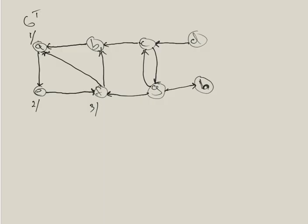B has an arrow going to A, but we can't go there because we've already been. So B finishes at time five. We go back to its predecessor F — no other edges — so F finishes at time six. We go back to E, which finishes at time seven, then back to A, which finishes at time eight.